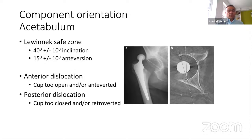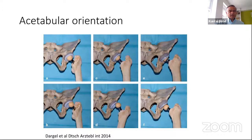During any hip replacement surgery, we want the acetabulum and femur well aligned. We've always focused on the safe zone with about 40 degrees of inclination and about 15 degrees of anteversion. If the cup is too anteverted or too open, you risk anterior dislocation; if the cup is too closed or retroverted, you risk posterior dislocation. These orientations are illustrated: an anteverted cup risks anterior dislocation, an open cup risks superior dislocation, and a retroverted cup risks posterior dislocation.